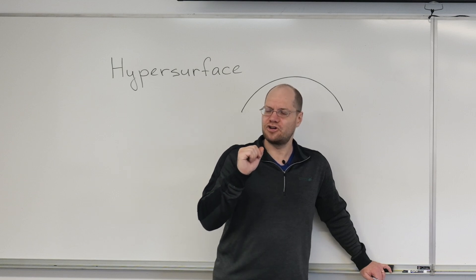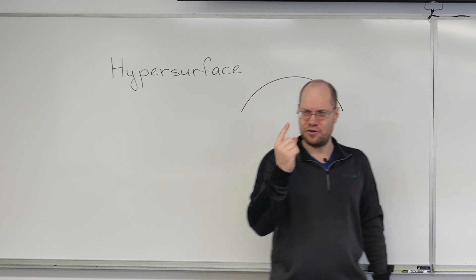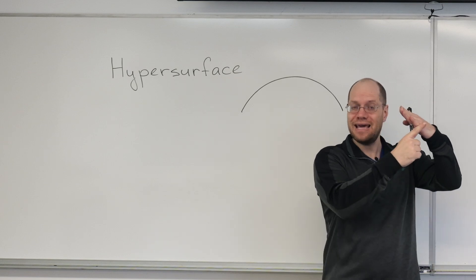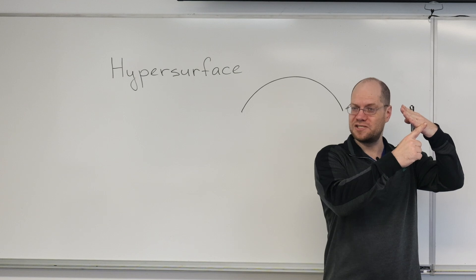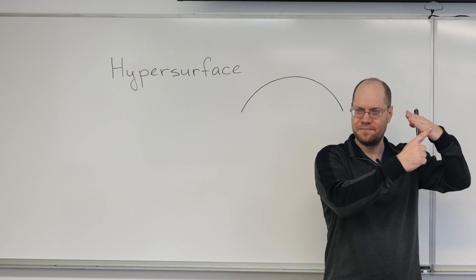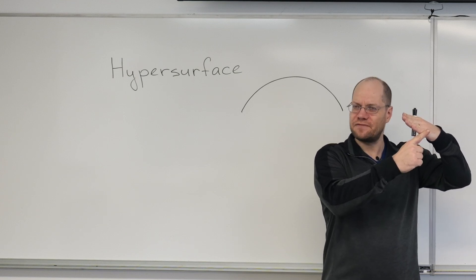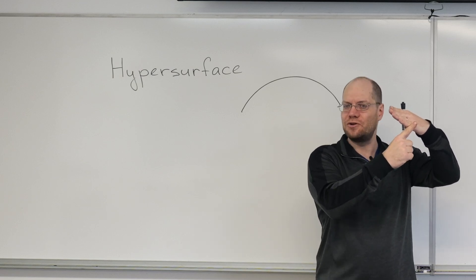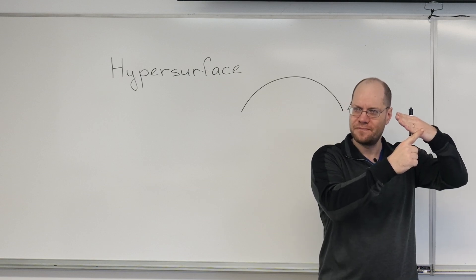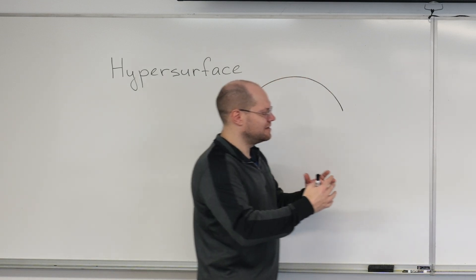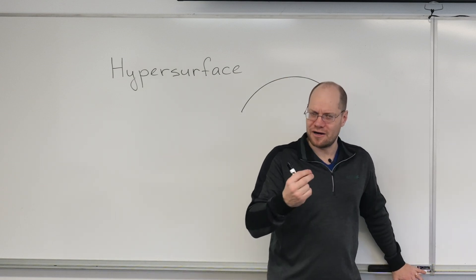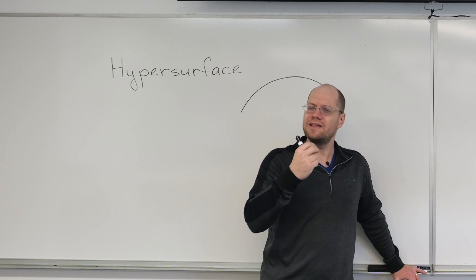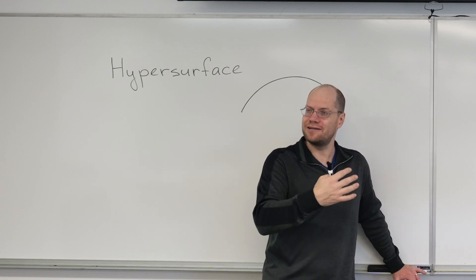Let's contrast it with the curve in the three-dimensional space. If you have a curve in three-dimensional space, then there is an entire plane orthogonal to it, so the normal space is two-dimensional. We did find a very special way to choose one of those infinitely many directions, and that was called the principal normal. But that required differentiation and the concept of curvature — it required a little bit more.